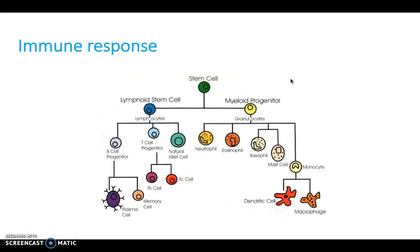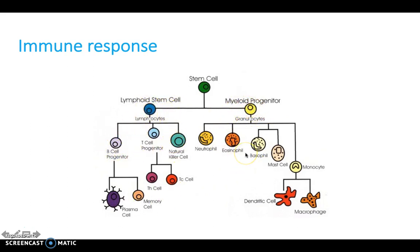It's also important to understand the cells involved within the immune response, and that they all come from one stem cell. A stem cell can either be a lymphoid stem cell or a myeloid progenitor cell, and the cells that these lead to are all involved within the immune response, as well as some other things such as the complement system, which we'll look at in a moment.